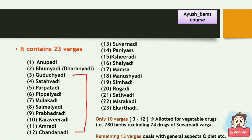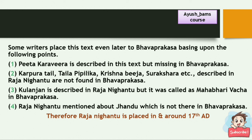Among all 23 Vargas, only 10 Vargas — from the 3rd Varga to the 12th Varga — are allotted for vegetable drugs, covering 780 herbs excluding 74 drugs of Suvarnadi Varga. The remaining 13 Vargas deal with general aspects and diet. Some writers place this text even later than Bhavaprakasha, based on the following points.